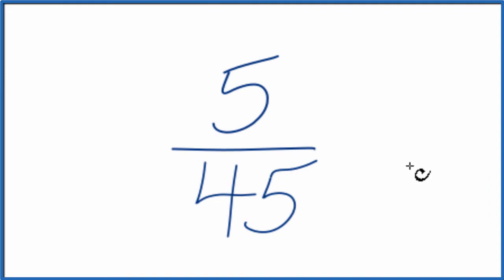To do that, we need to find the greatest common multiple between 5 and 45, so a number that goes into the numerator and the denominator evenly.